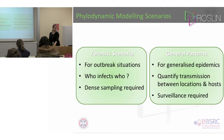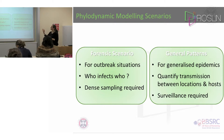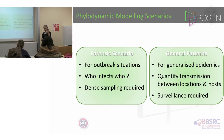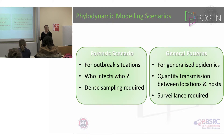Generally, in phylodynamics, I really consider there are two parts to it. There's the forensic scenario, which you actually started to hear about this morning. This is really for when you're trying to ask which individual infected which other individual. And to do that, you need very dense sampling. Obviously, if you're going to start saying it was definitely A that infected B, you better have made sure you've sampled all of the individuals that it could possibly have been.